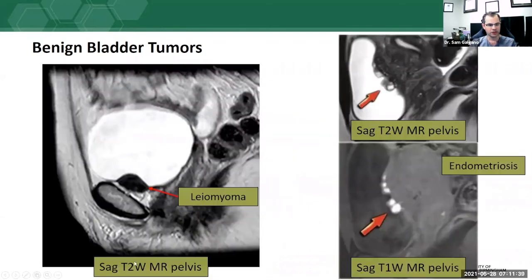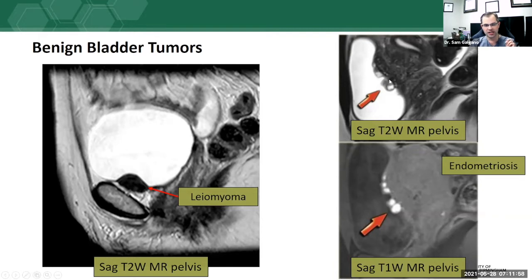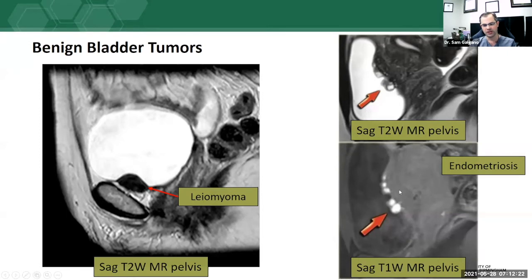On a sagittal T2-weighted MRI of the pelvis, a very smooth, well-circumscribed T2 hypointense lesion arising from the muscular layer of the bladder wall was biopsied and proven to be a leiomyoma — a benign bladder tumor. For bladder endometriosis, on a sagittal T2-weighted image paired with a T1-weighted image, blood products typical of endometriosis appear bright on T1. Multiple T1-bright lesions along the posterior surface of the bladder in a patient with biopsy-proven endometriosis show this characteristic T1 brightness.